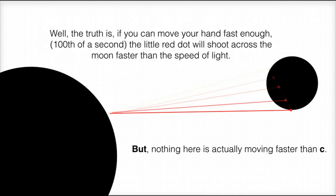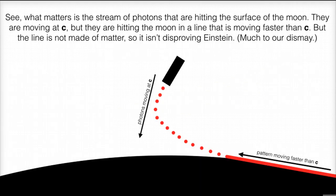Well, the truth is, if you can move your hand fast enough, in one hundredth of a second, the little red dot will shoot across the moon faster than the speed of light. But nothing here is actually moving faster than C. What matters is the stream of photons that are hitting the surface of the moon. They are moving at C, but they are hitting the moon in a line that is moving faster than C. But the line is not made of matter, so it isn't disproving Einstein, much to our dismay.